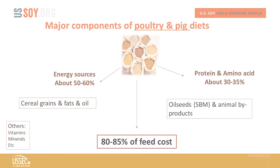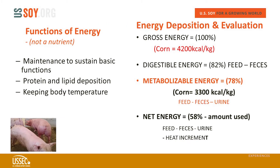Since energy and protein are the most essential components of diets, let's talk about energy. Energy is not considered a nutrient per se, but it is produced from nutrients such as digestible protein, carbohydrates, starch, and so on — basically we use energy to measure the nutrients available in the feed. Energy is important because it maintains the basic functions in the animal's body, supports protein and lipid deposition so nutrients are absorbed and used for performance, and keeps body temperature at its normal level.